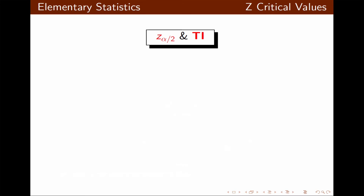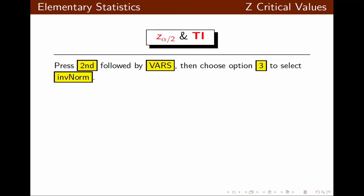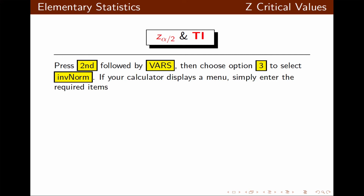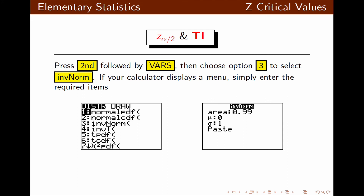In this class we are using a TI calculator to find the critical value. We press 2nd, followed by VARS, then choose option number 3 for inverse norm. If your calculator displays a menu, simply enter the required items: the left area with a mean of 0 and a standard deviation of 1.